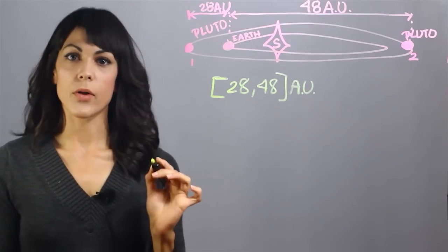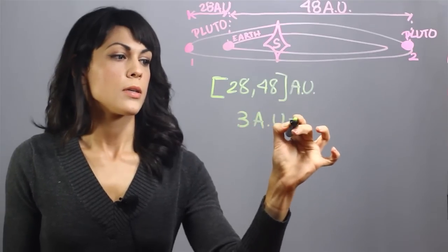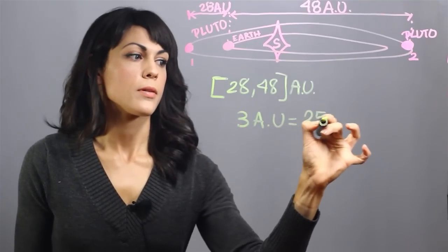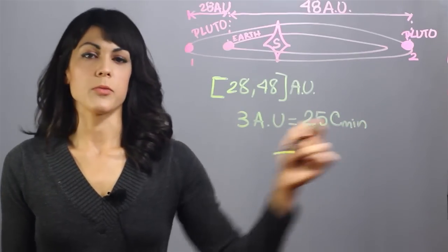Now, one of the things you need to know is that 3 astronomical units equals 25 light minutes. And this is the abbreviation for light minutes.